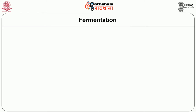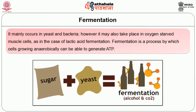Let us know what fermentation is. Fermentation is a metabolic process which converts sugars to acids, gases or alcohol. This process mainly occurs in yeast and bacteria. However, it may also take place in oxygen-starved muscle cells, as in the case of lactic acid fermentation. Fermentation is a process in which cells grow anaerobically and are able to generate ATP. Thus, fermentation is defined as the breakdown of glucose or other sugars in which the terminal hydrogen acceptor is an organic molecule.